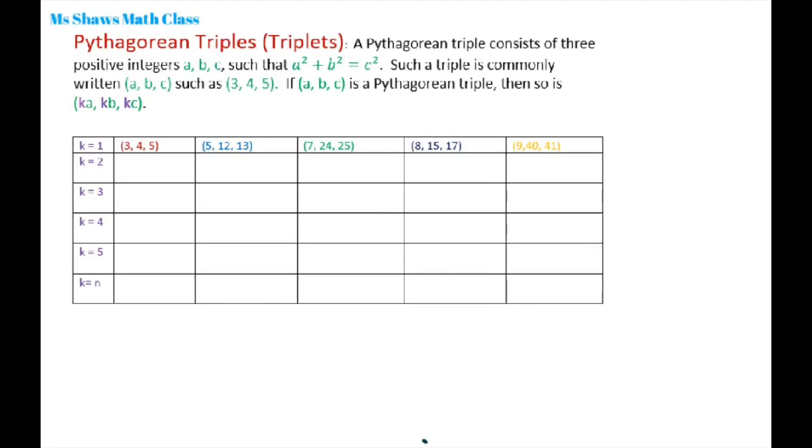If (a, b, c) is a Pythagorean triple, then so is (ka, kb, kc). So basically what we're doing is knowing our Pythagorean triples, especially when you take your SAT test, so you're not constantly having to figure it out on your own. You can just memorize these.